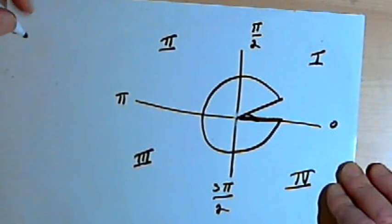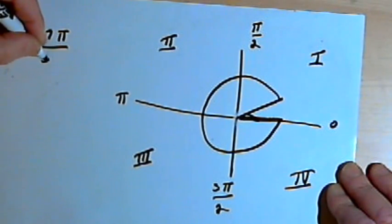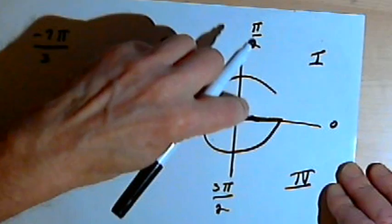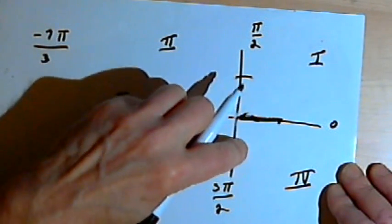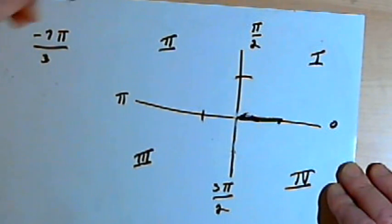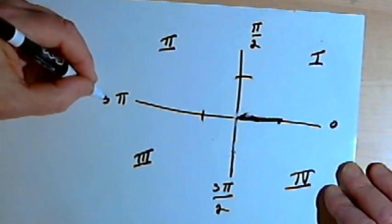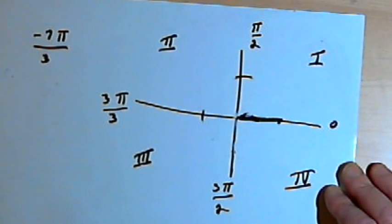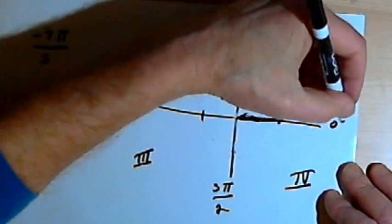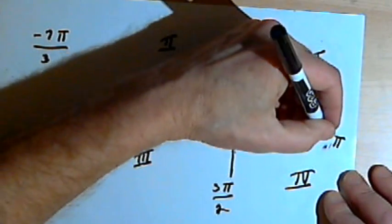And one more. Let's say we want negative 7π over 3. Once again, let's change some of these denominators, or change what the fractions look like. So π would be the same as 3π over 3. And that would mean that 2π would be the same as 6π over 3.